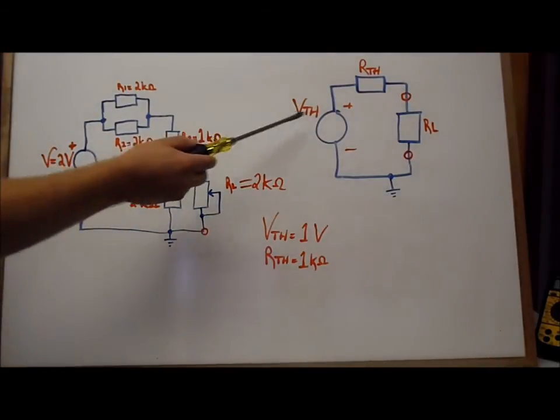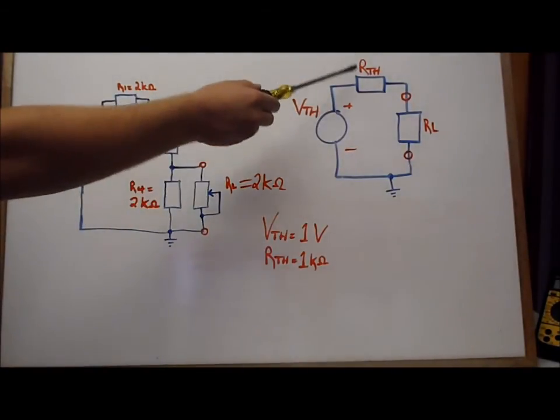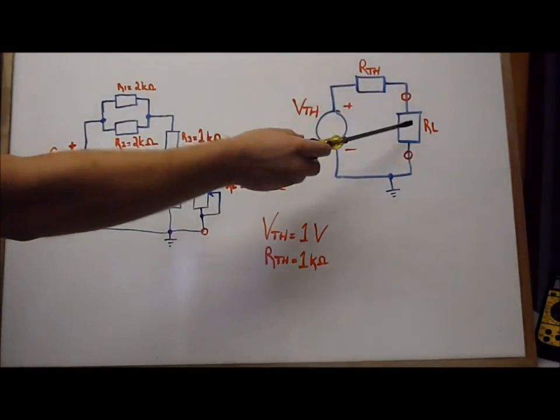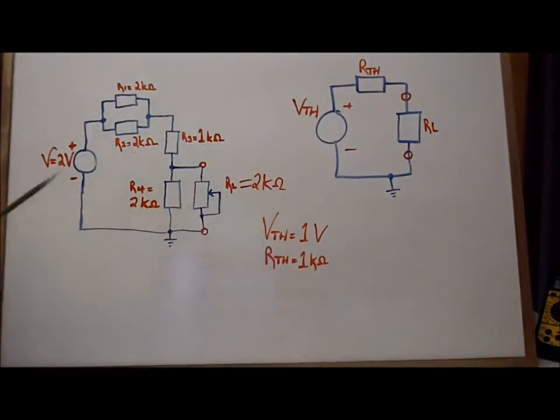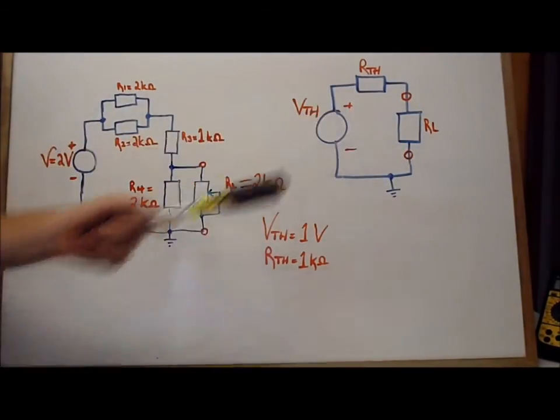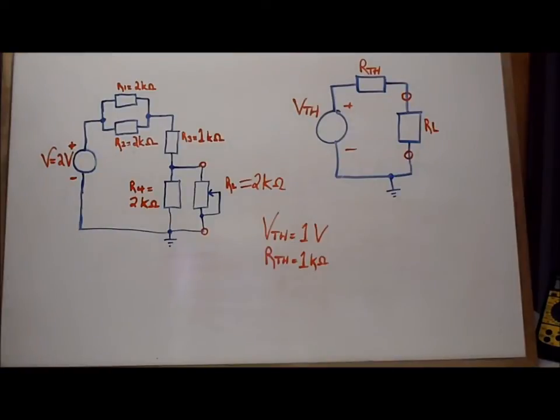So our Thevenin's voltage is one volt, our Thevenin's resistance is one kilo ohm, and our RL is two kilo ohms. So let's actually take the measurements and actually determine what's occurring in our circuit, so that way we can actually prove that this is equivalent to this. Because if we do a quick voltage divider, we should determine that we get 0.667 volts at the actual RL. But let's prove it to ourselves.